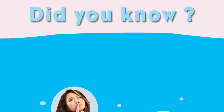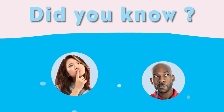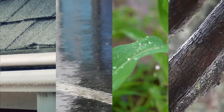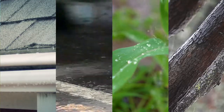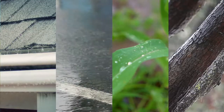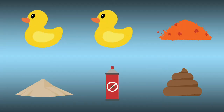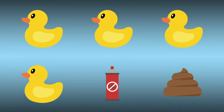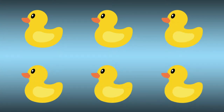Did you know that the largest contributor to water pollution today is storm water runoff? When rain lands on our rooftops, roads, fields, and forests, the water picks up pollutants including trash, cigarette butts, yard debris, sediment, pesticides, and animal waste.